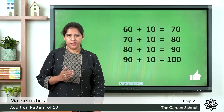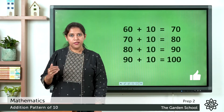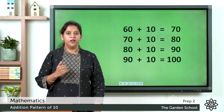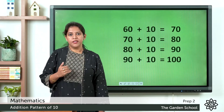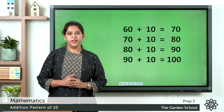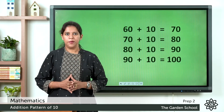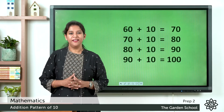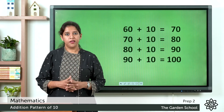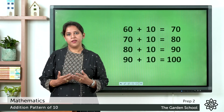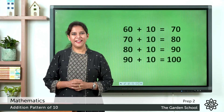We learn: 10 plus 10 is 20, 20 plus 10 is 30, 30 plus 10 is 40, and 90 plus 10 is 100. This is the addition pattern of 10. We learn how to read it in the book, repeatedly, in the class.